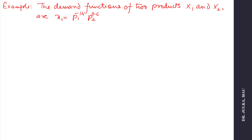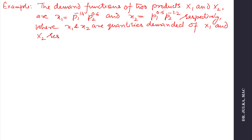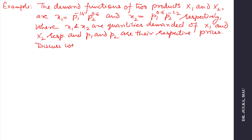The demand functions of products X1 and X2 are: X1 = P1^(−1.4) · P2^(0.6) and X2 = P1^(0.5) · P2^(−1.2) respectively, where X1 and X2 are quantities demanded and P1, P2 are their respective prices. Discuss whether X1 and X2 are complementary or competitive products.